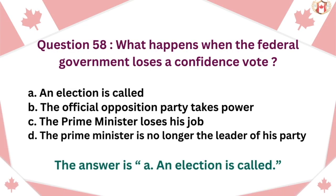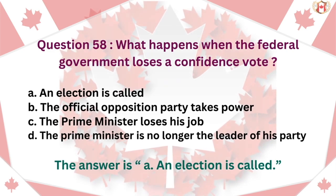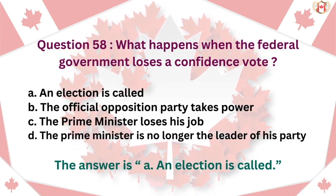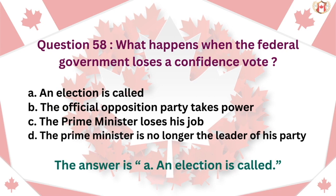Question 58: What happens when the federal government loses a confidence vote? A. An election is called, B. The official opposition party takes power, C. The Prime Minister loses his job, D. The Prime Minister is no longer the leader of his party. The answer is A. An election is called.